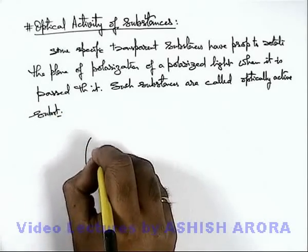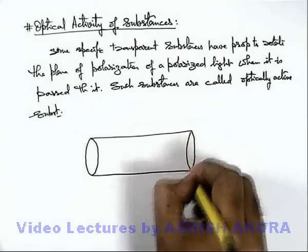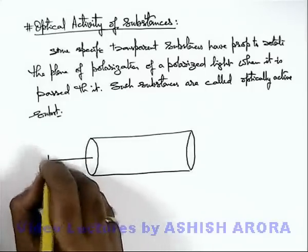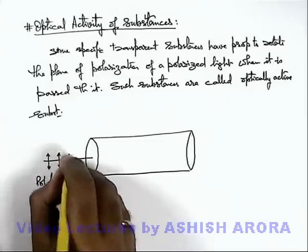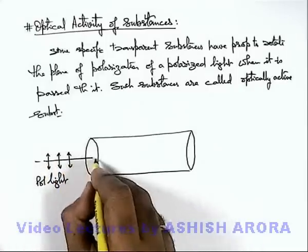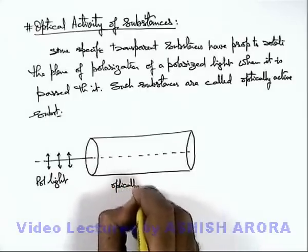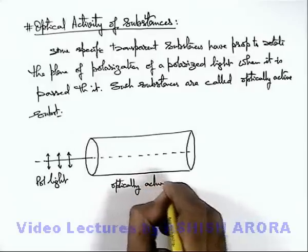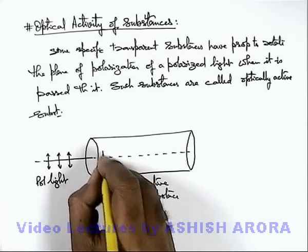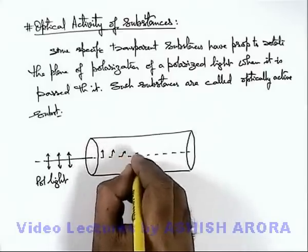If in a tube — a transparent glass tube — we fill an optically active substance, on which when a polarized light is allowed to be incident, which is having its vibration plane in the vertical direction as I am drawing here, so when the vibrations are incident onto the optically active substance in this tube, as the light propagates, the direction of the plane rotates.